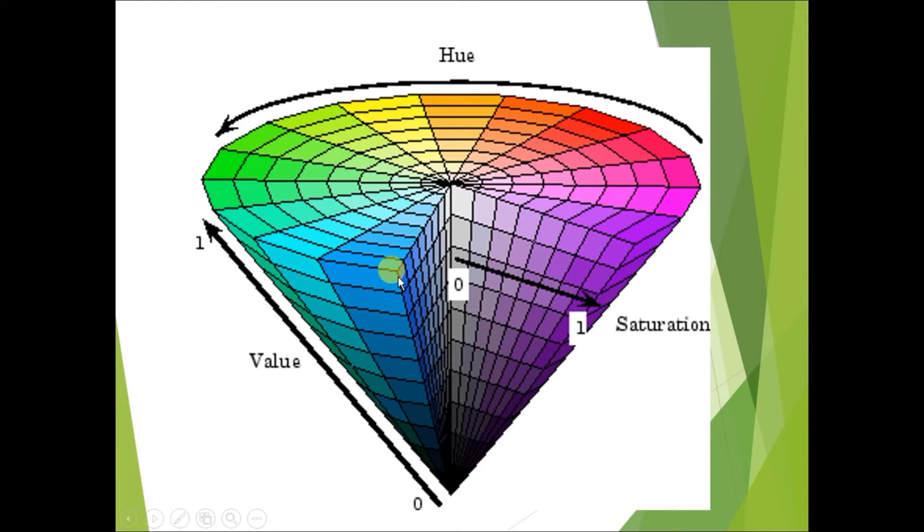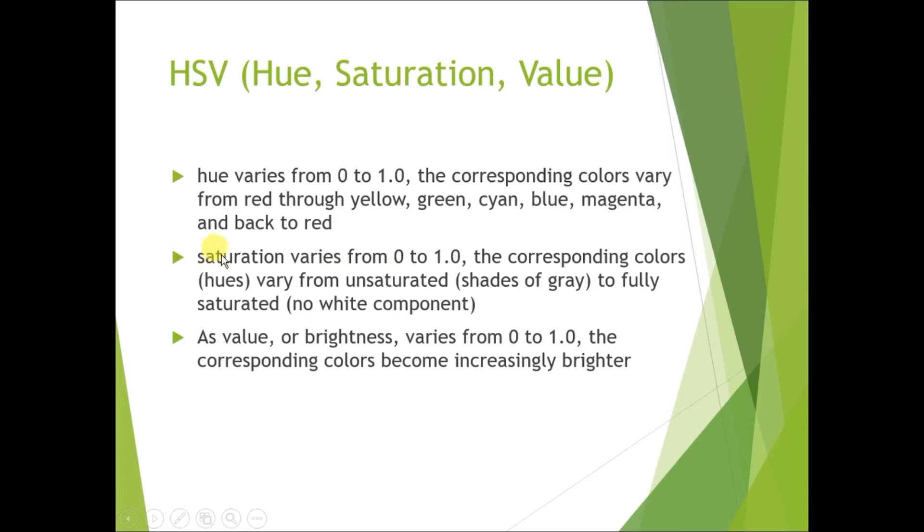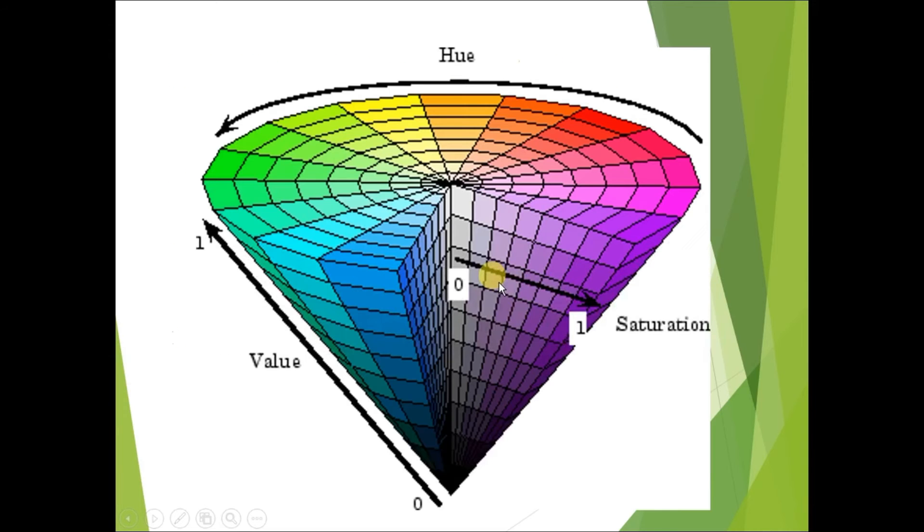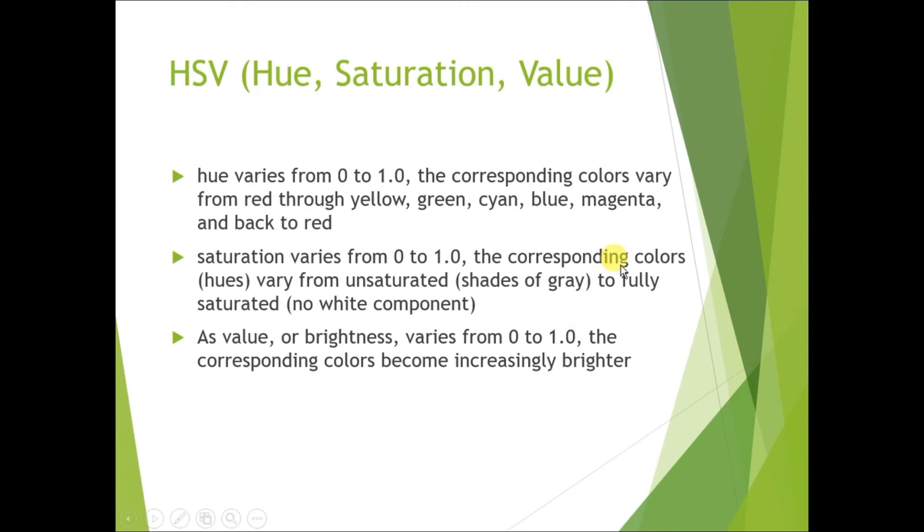Next is saturation, which is the shades of gray of the color. Saturation also varies from 0 to 1. So this is the saturation. If I have selected this red color, then this is the saturation of that color, meaning the intensity of color is increasing. Saturation 1 means fully saturated colors and 0 means totally unsaturated colors at this point.